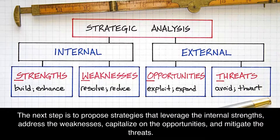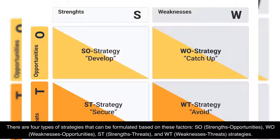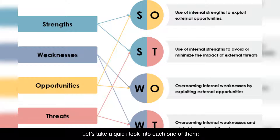The next step is to propose strategies that leverage the internal strengths, address the weaknesses, capitalize on the opportunities, and mitigate the threats. There are four types of strategies that can be formulated based on these factors: SO (strengths-opportunities), WO (weaknesses-opportunities), ST (strengths-threats), and WT (weaknesses-threats) strategies. Let's take a quick look into each one of them.